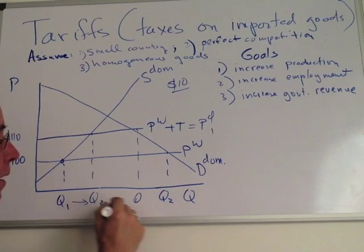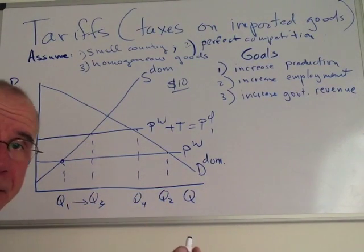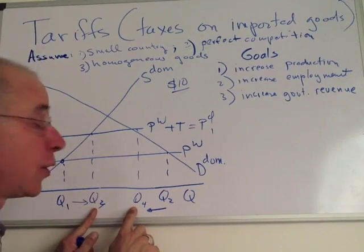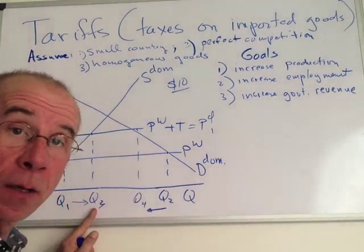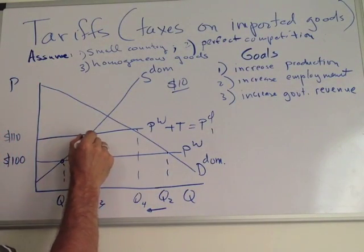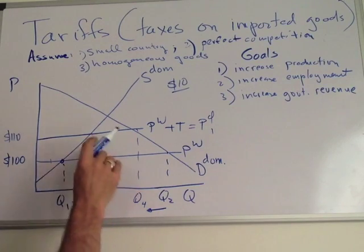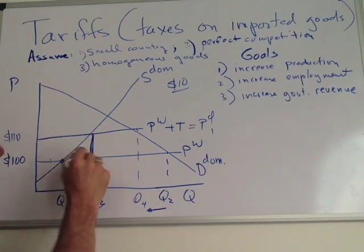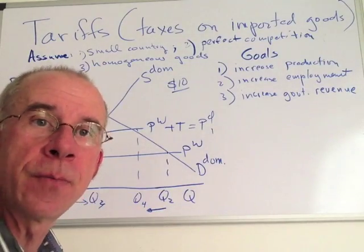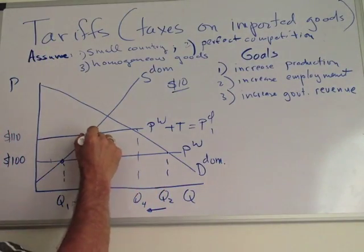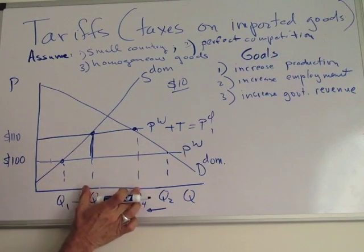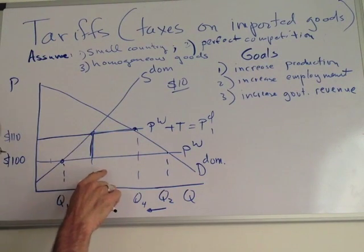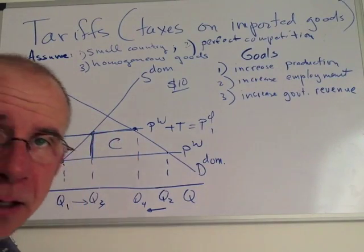The increase in price will reduce domestic consumption — now you import only Q3 to Q4. Let's take a look at the government revenue part. The difference between the two horizontal lines is the tariff — $10. That vertical distance of $10 is the amount of tariff revenue per unit of imports that the government receives. The amount of imports — the difference between domestic consumption and domestic production — multiplied by the per unit tariff revenue gives you government revenue of area C.